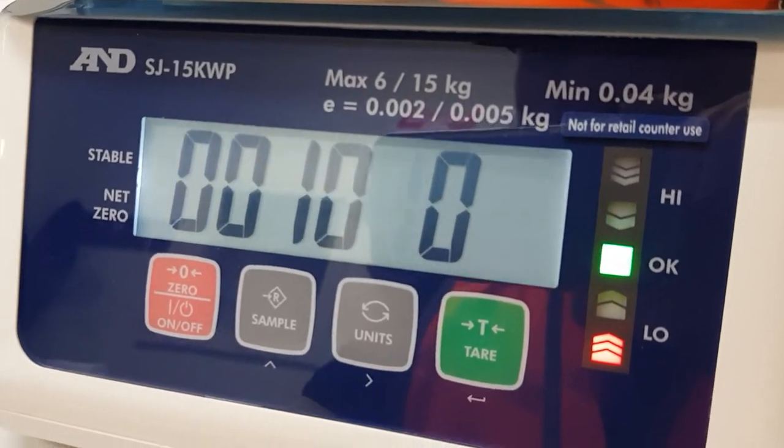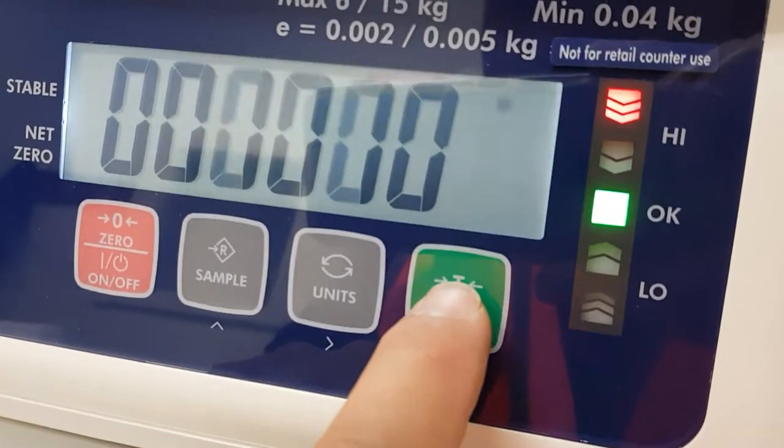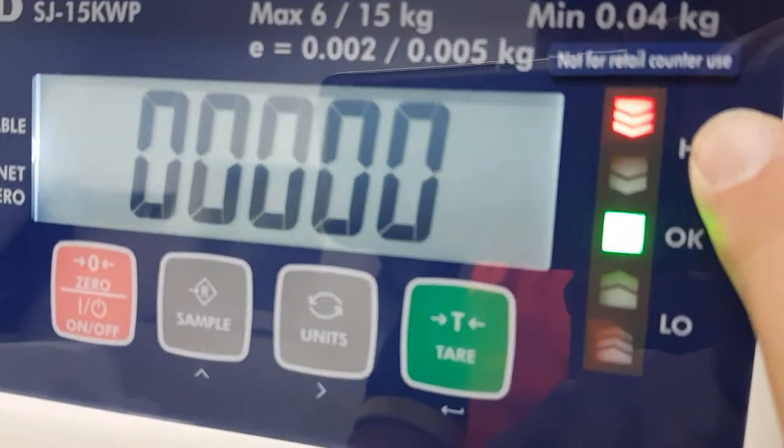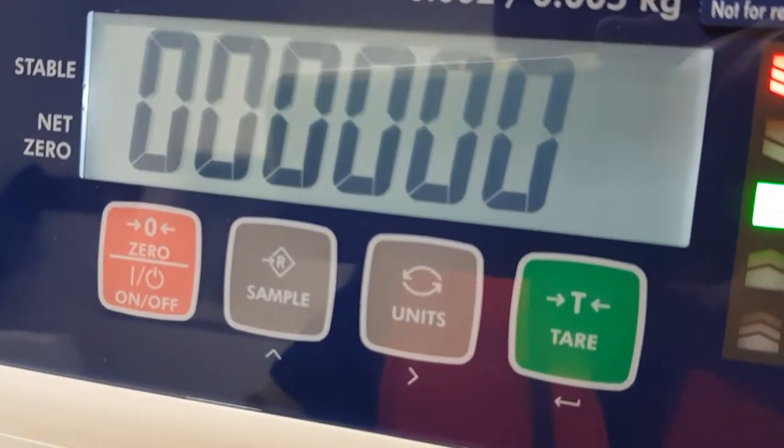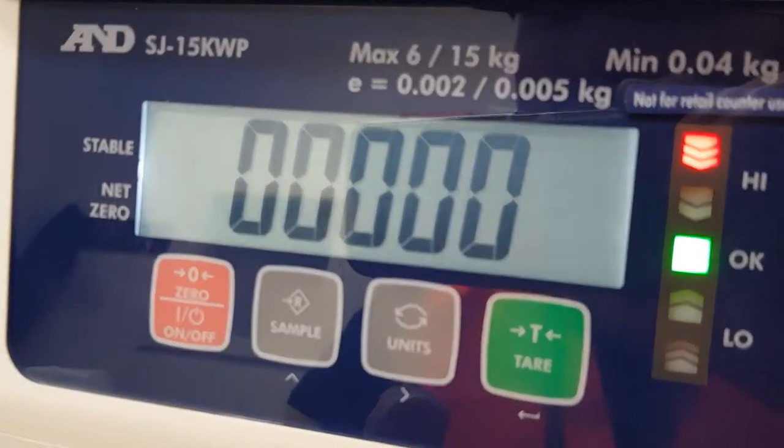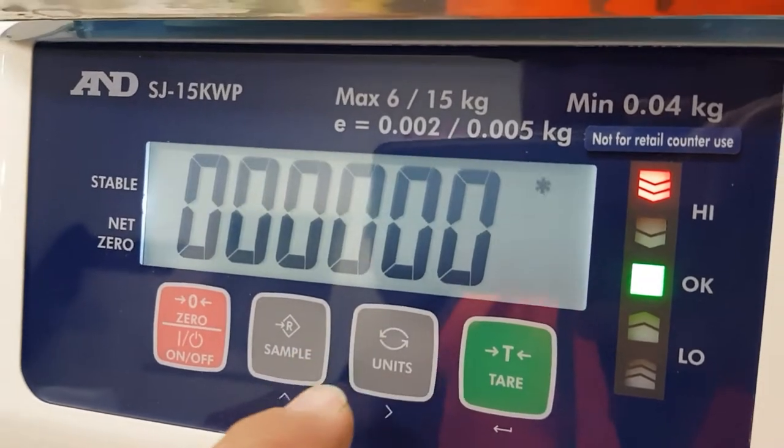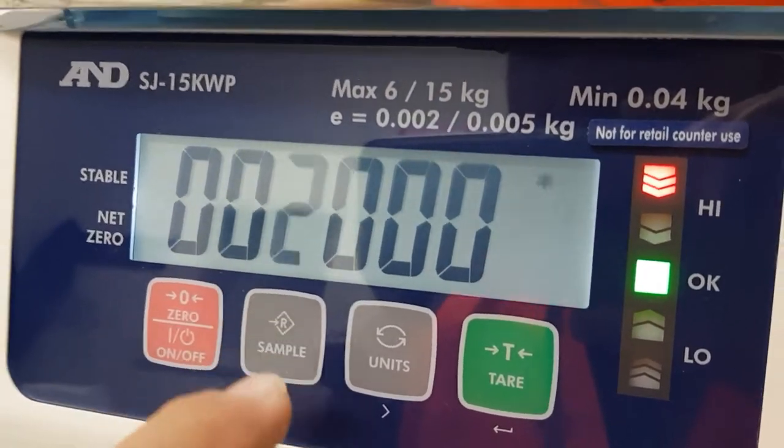Then when you're happy with that, you press the tare key. Now it goes to the high value setting. Again we've got all zeros on the screen. If we want to go to 2,000 grams as our high value, we go across until the thousands column is flashing, go up twice.